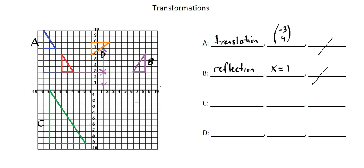Now let's move on to transformation C. We can observe a clear change in the dimensions of the image triangle in C, so whether larger or smaller, this is an enlargement — in this case, larger. Now let's identify the scale factor by comparing two corresponding sides of the triangles. The object's base has a length of two, and the image's base has a length of six. So the scale factor is six divided by two, or three.